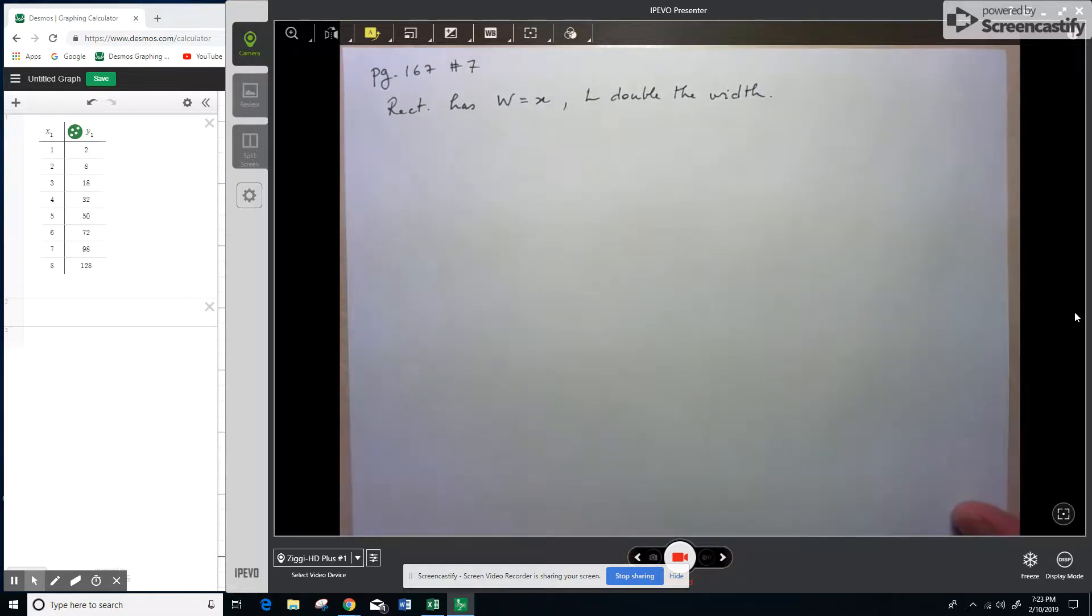Hi folks, we're going to take a look at number 7 on page 167. So they tell us that a rectangle has a width of x centimeters and its length is double its width.